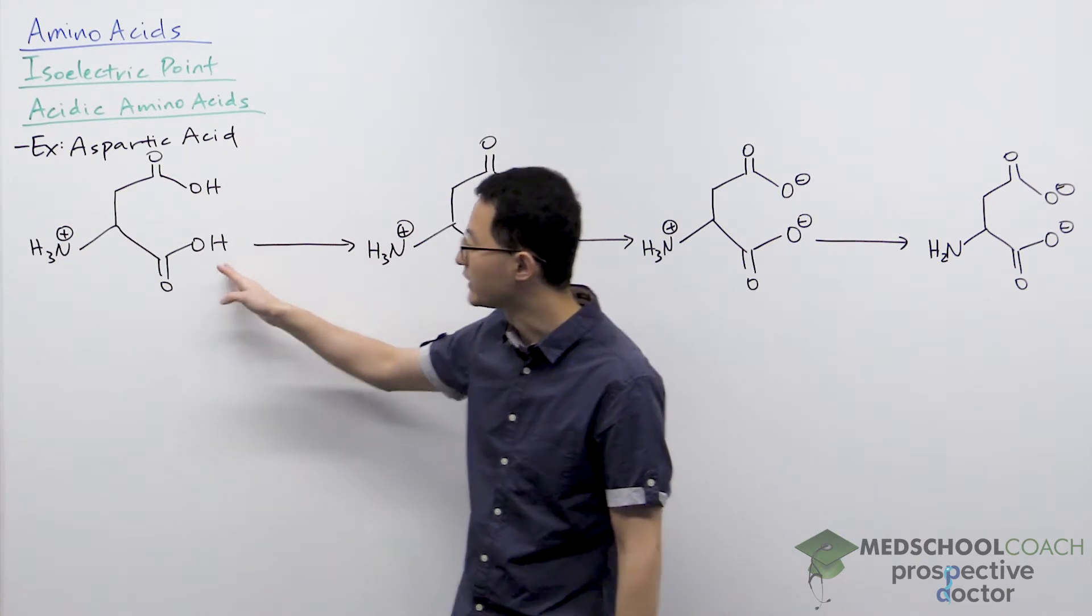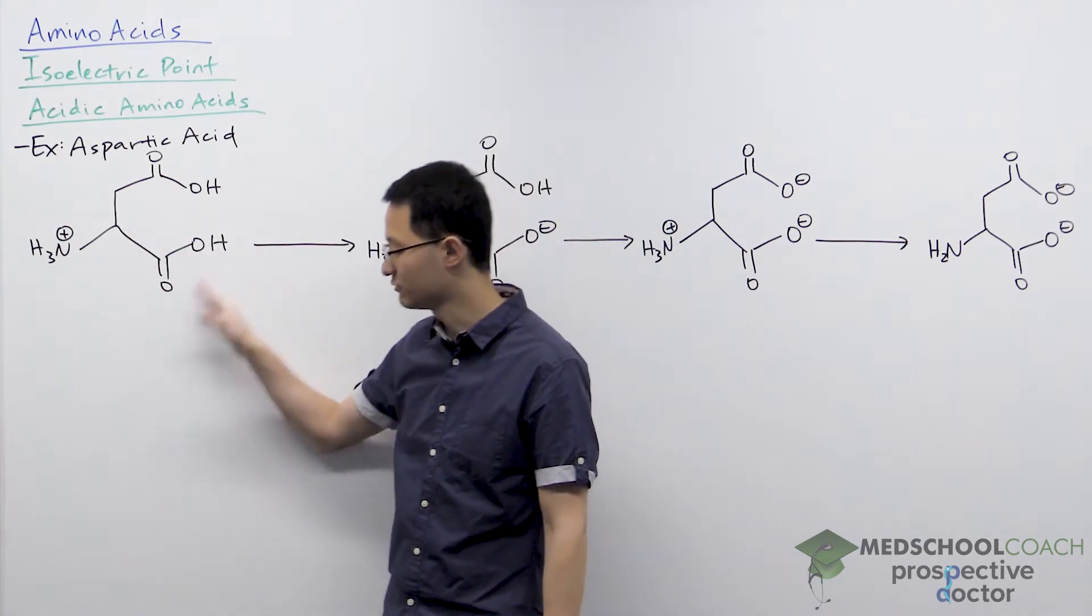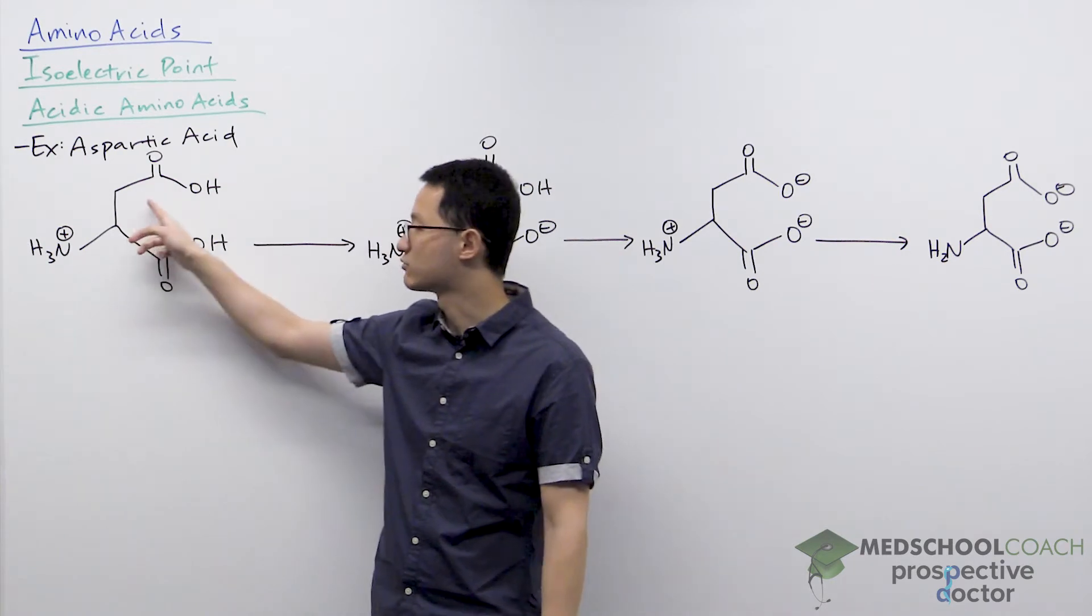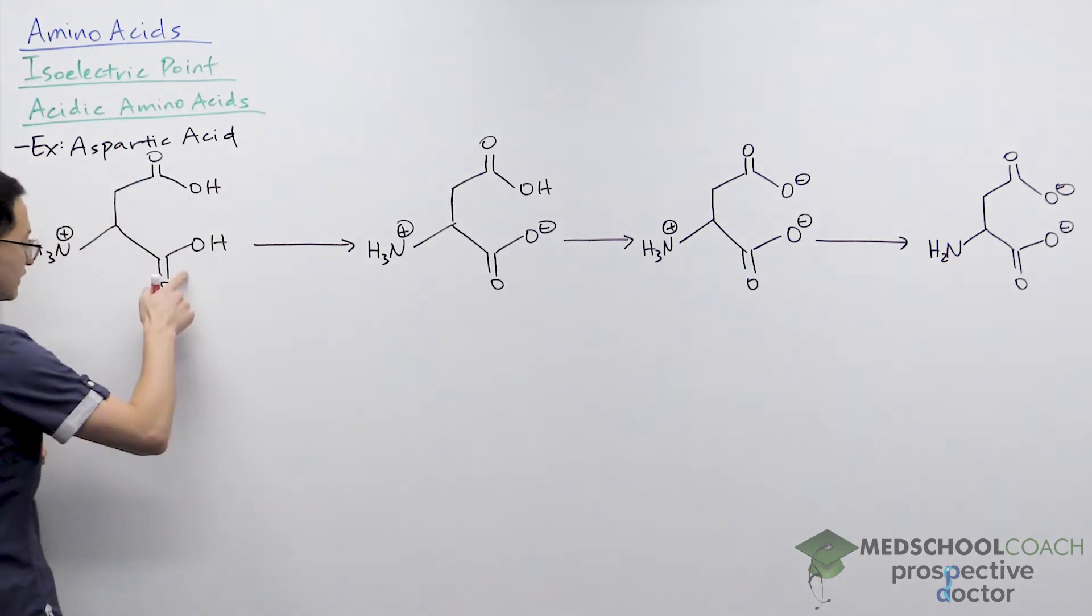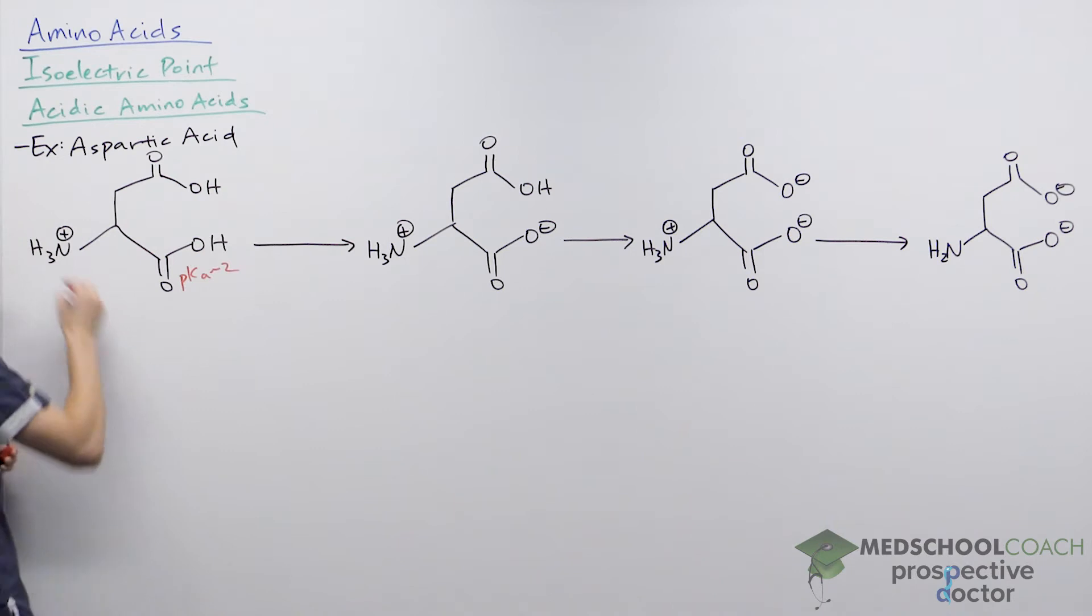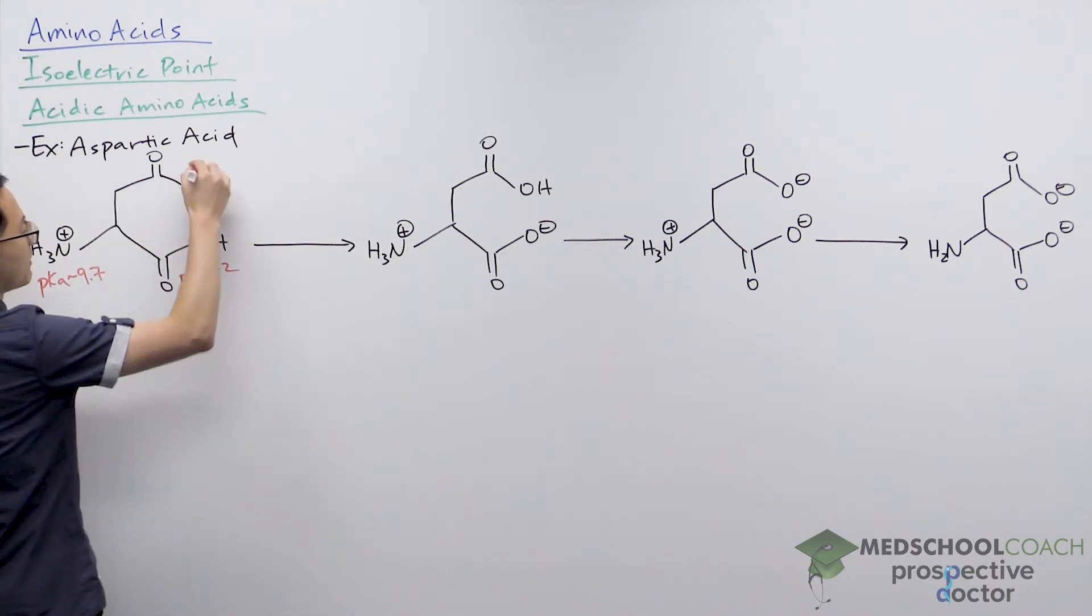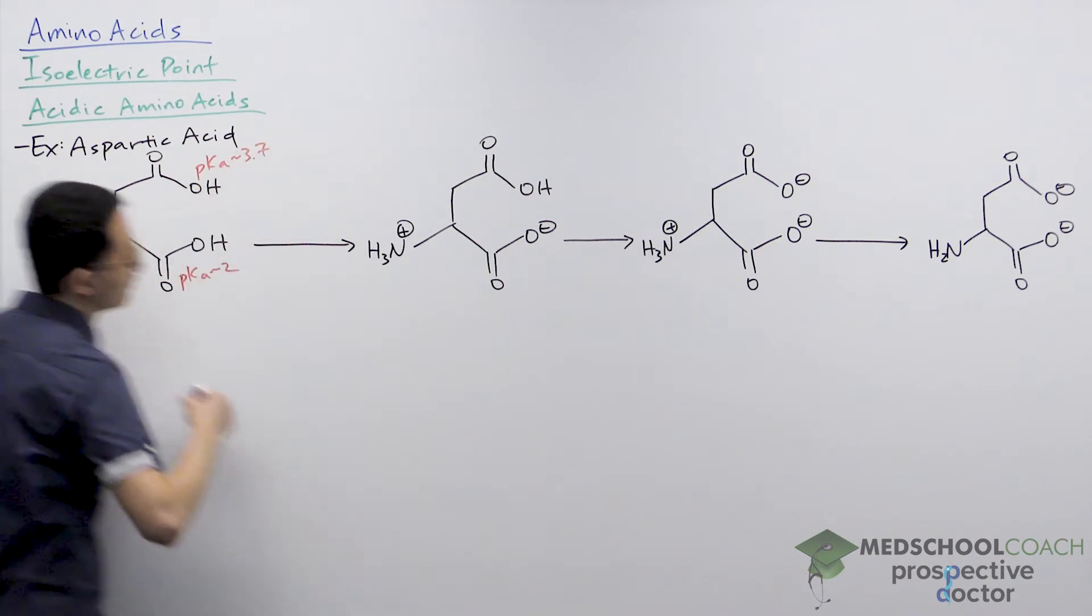You can see here that we now have three acidic groups: the carboxylic acid group, the amino group, as well as the side chain of aspartic acid. Now the pKa of the carboxylic acid is always around 2. The amino group of aspartic acid is around 9.7, and the side chain of aspartic acid has a pKa of about 3.7.